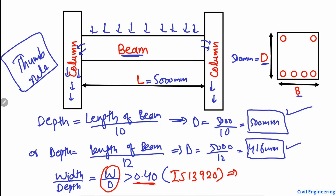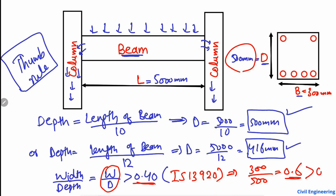Let's take an example. Suppose the width of the beam is 300 millimeters. Then 300 divided by the depth of 500 millimeters gives us 0.6. Since 0.6 is greater than 0.4, our beam is safe and we can proceed with designing using this width.